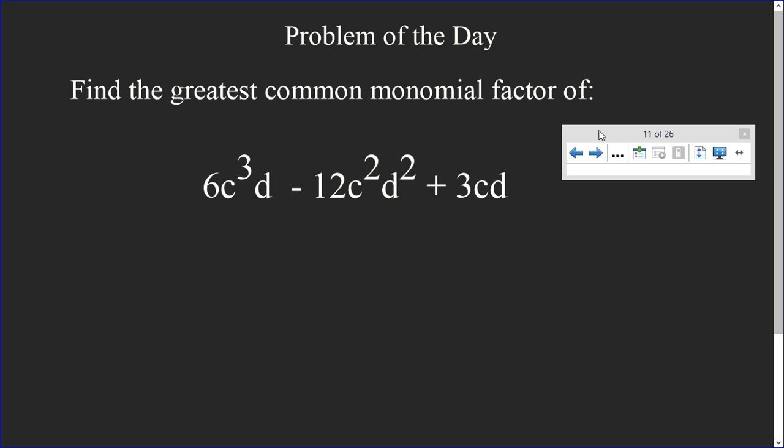Find the greatest common monomial factor of 6 C to the third D minus 12 C squared D squared plus 3 C D. I notice there are two letters now. So you'll be looking for the biggest number that you can divide into them, as well as the common letters that they both have in common. So good luck on that one.